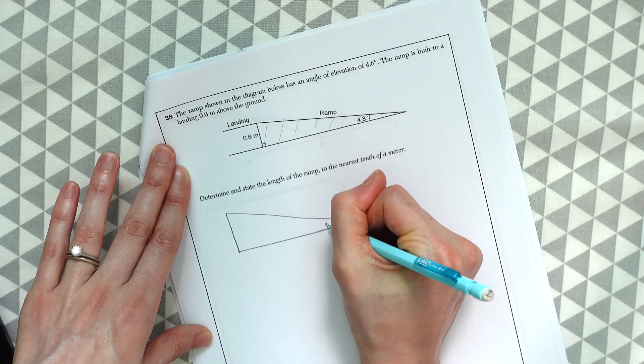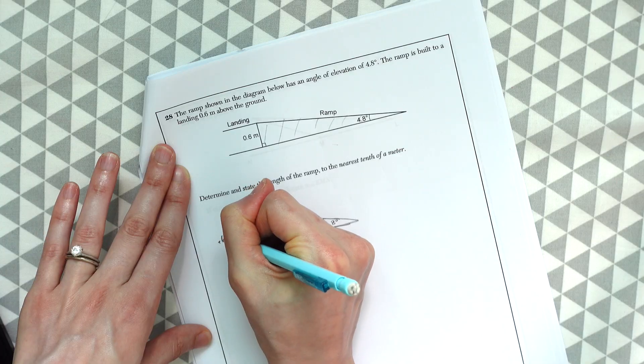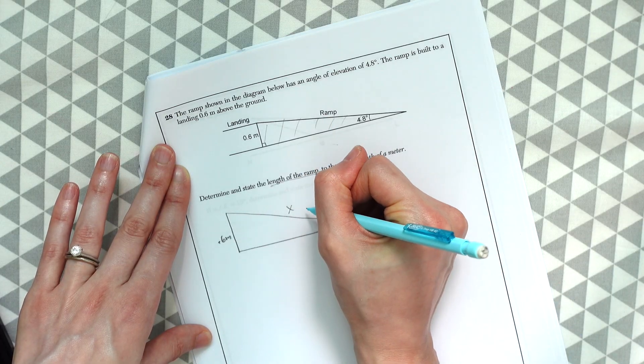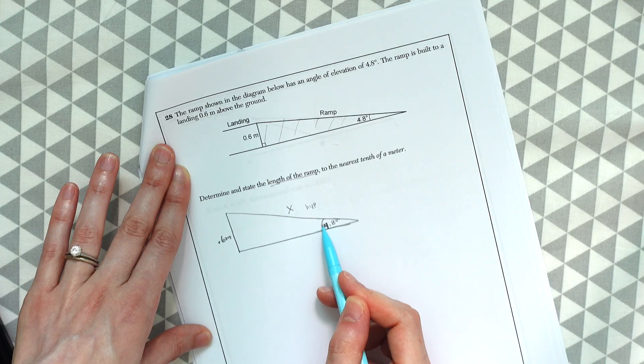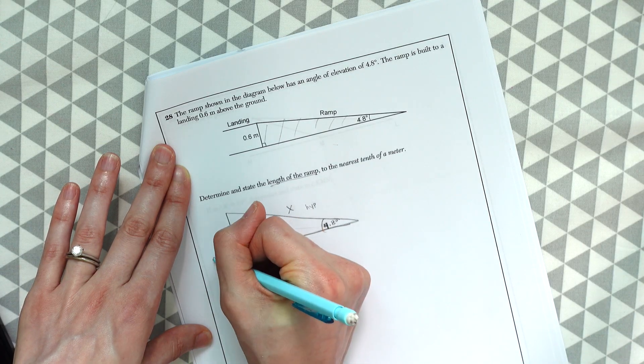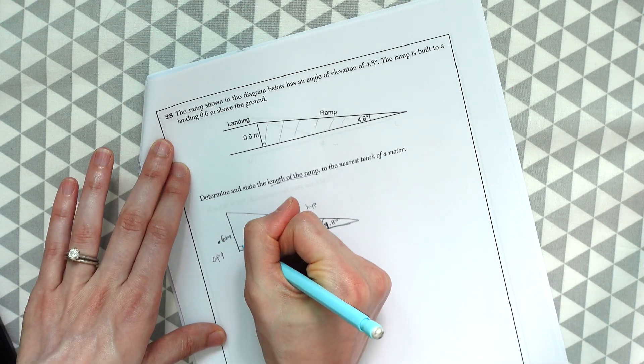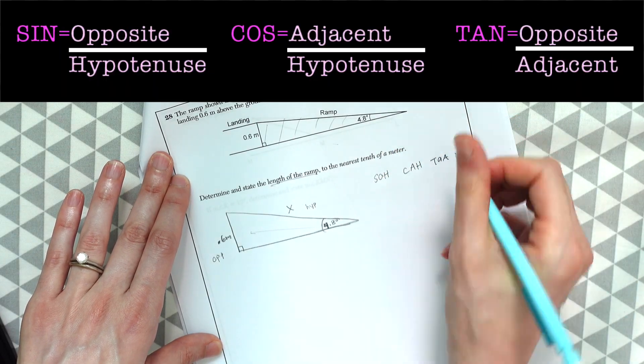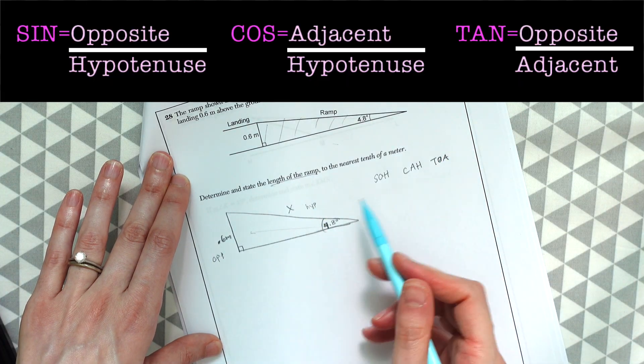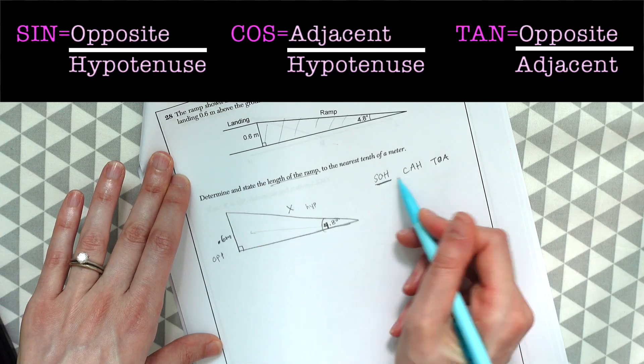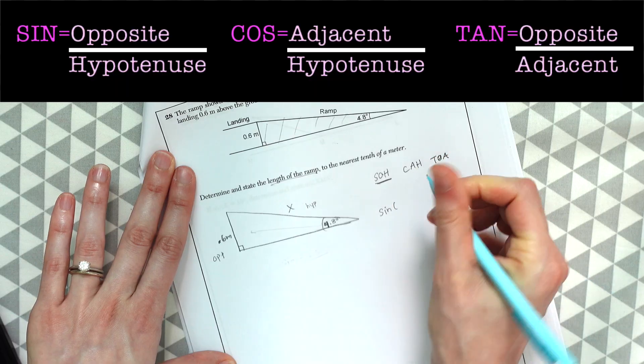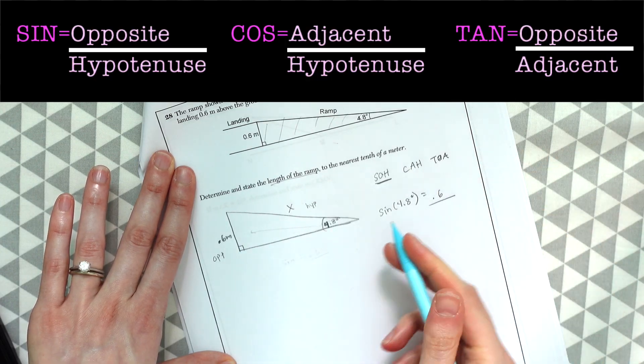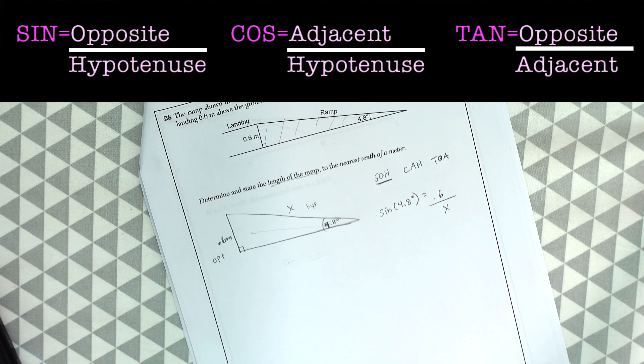And they give us that this angle is 4.8 degrees. We know that this length here is 0.6 meters. And then they want us to find the length of the ramp right here, this is where the ramp is, which we know is the hypotenuse. And in relation to this angle, the other piece of information we have is the opposite. So in case you haven't guessed it yet, we're going to be using SOHCAHTOA here because this is a right triangle, which is why we mapped out the hypotenuse and the opposite value. So if you look for the hypotenuse and the opposite, you can see that we're going to be using sine. So sine of our angle 4.8 degrees is equal to the opposite 0.6 over the hypotenuse x.